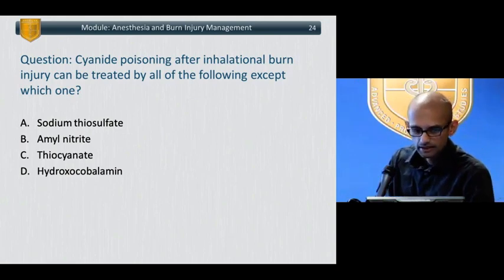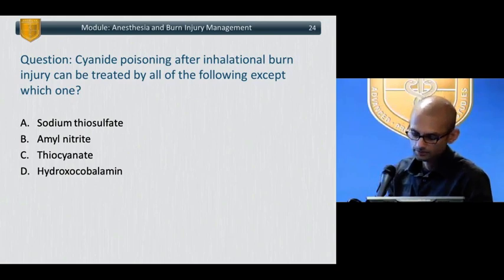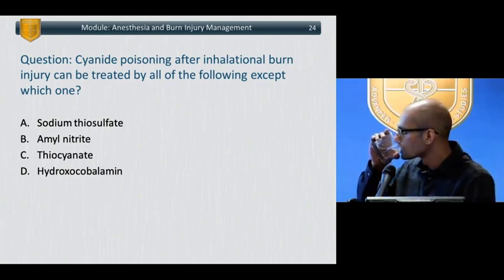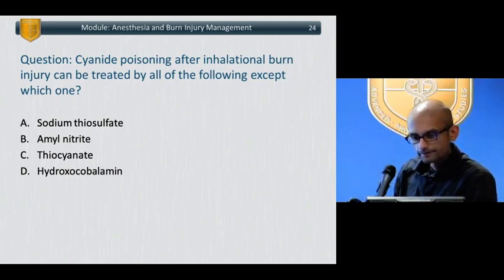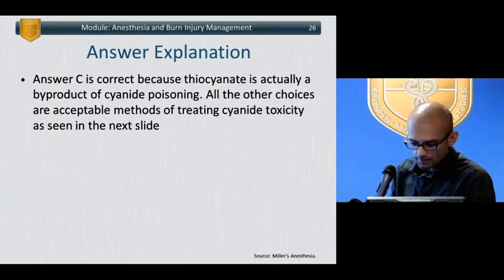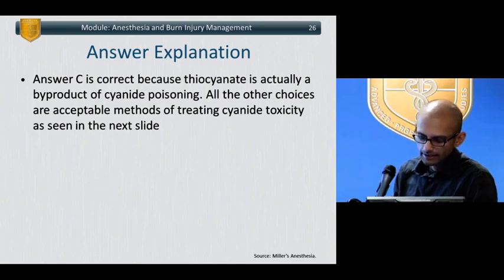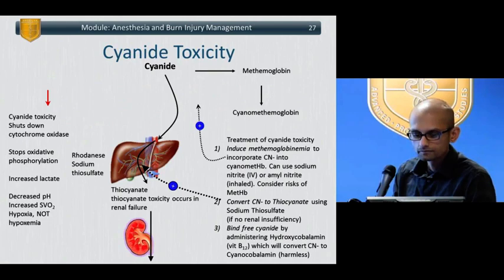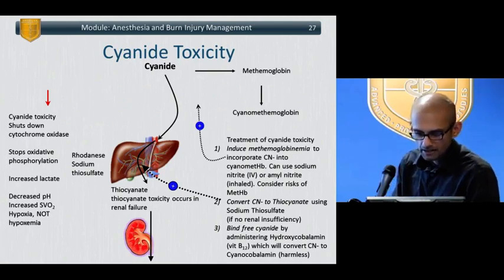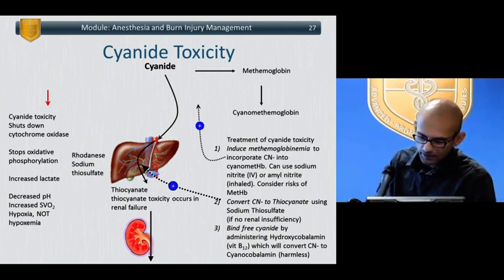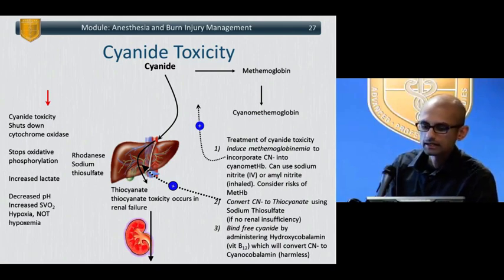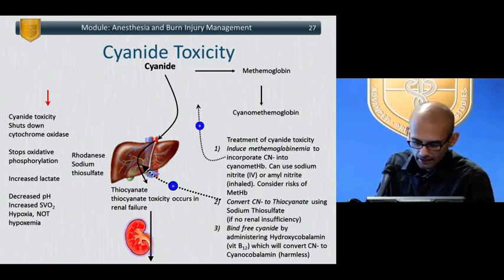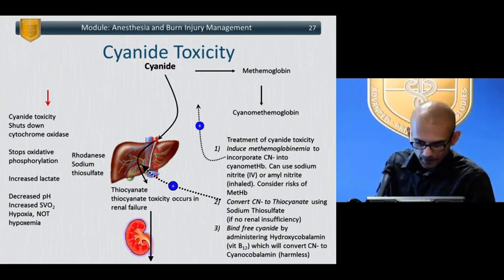Cyanide poisoning after inhalational burn injury can be treated by all of the following except thiocyanate. Cyanide toxicity presents in burn injury as well as sodium nitroprusside toxicity. Cyanide itself causes methemoglobinemia, and also binds to the methemoglobin it creates, forming cyanomethemoglobin. The normal disposition for cyanide is to be processed through the liver by the enzyme rhodanese using sodium thiosulfate as a cofactor, producing thiocyanate, which is renally excreted. In patients with renal failure, thiocyanate toxicity — causing delirium, coma, and possibly seizures — can become a significant issue.